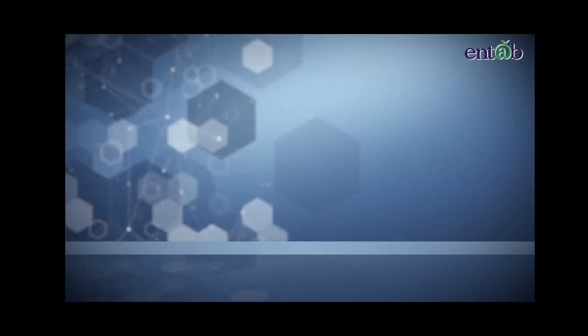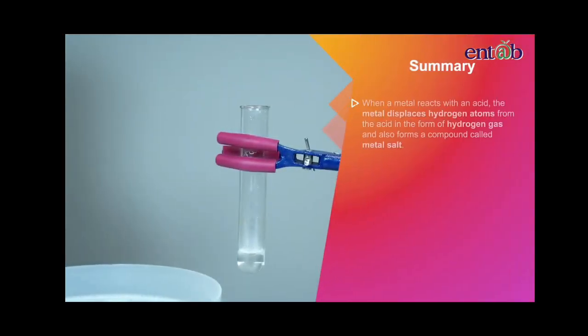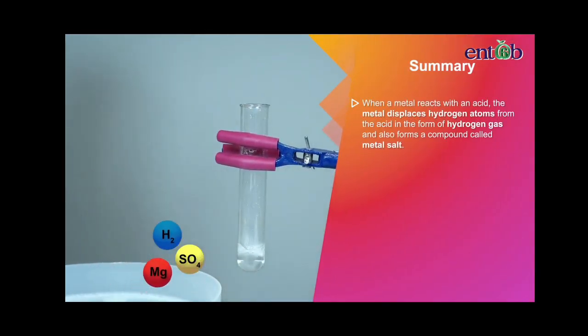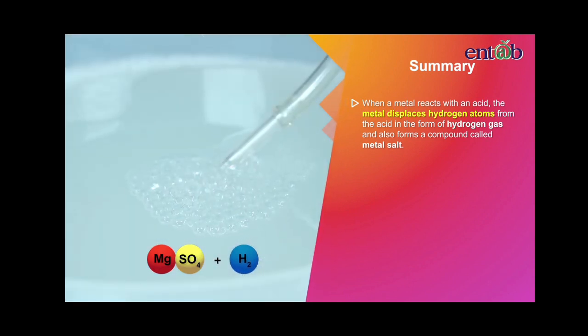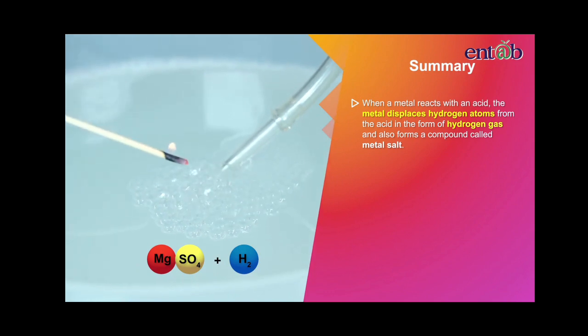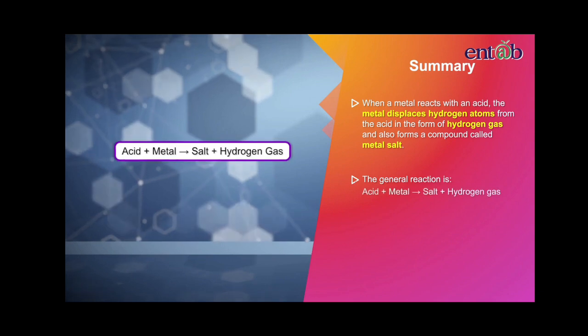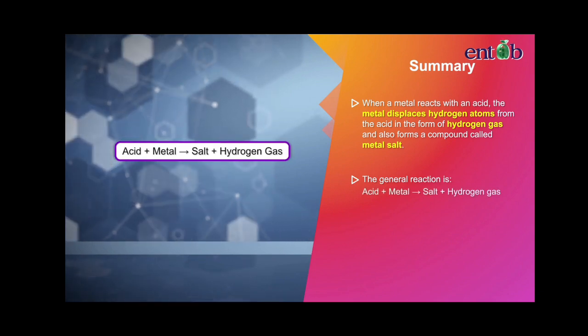Let's summarize the important points that we have learned in this module. When a metal reacts with an acid, the metal displaces hydrogen atoms from the acid in the form of hydrogen gas and also forms a compound called metal salt. The general reaction can be presented as shown.